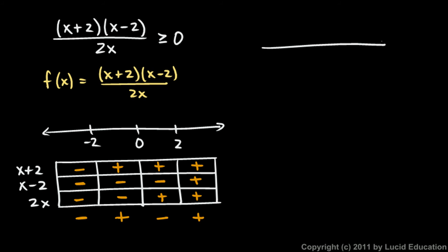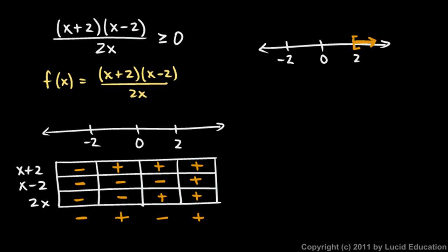So we can see our solution. Where this is greater than or equal to 0 will be the regions with a positive answer. I'll draw a number line with negative 2, 0, and 2. The solution includes all numbers between negative 2 and 0, and all numbers greater than or equal to 2. Since it's greater than or equal to, we include the endpoints — but we can't include x equals 0 because that gives a zero denominator. Written out: negative 2 is less than or equal to x is less than 0, or x is greater than or equal to 2.